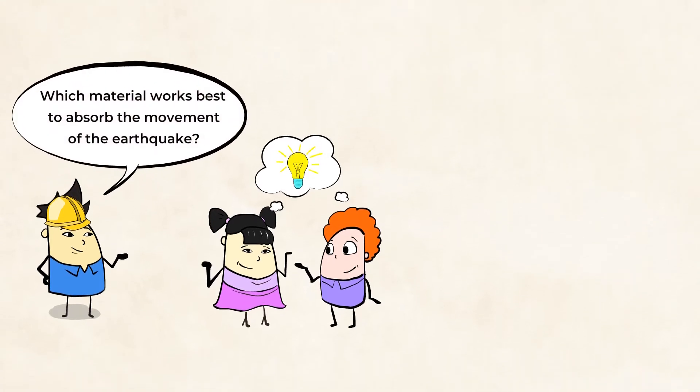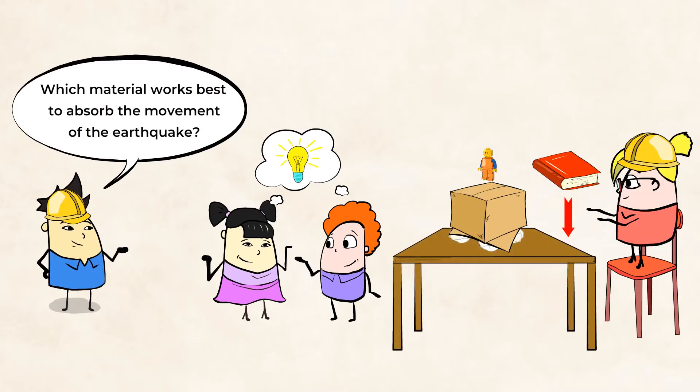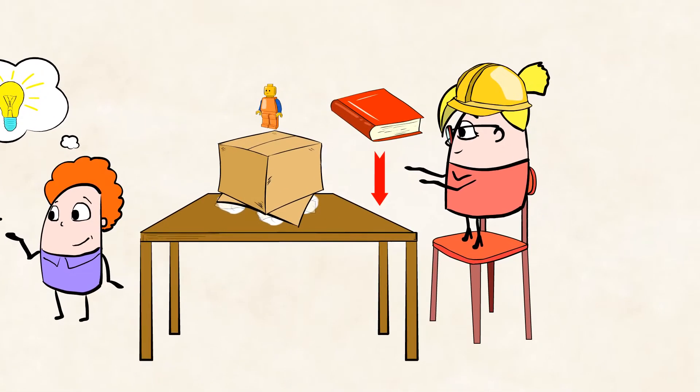Which material works best to absorb the movement of the earthquake? If your Lego figure doesn't fall over, that's a good indicator that your building would not be damaged by the quake. If you find a design that works, try to see how it would hold up to a stronger earthquake by dropping the book from two feet above the table.